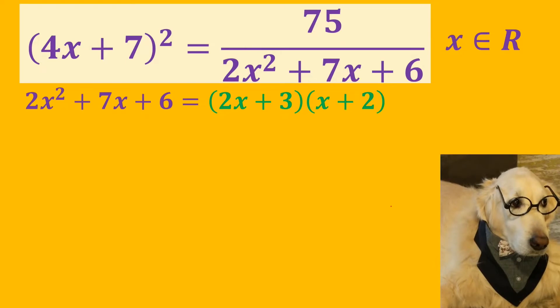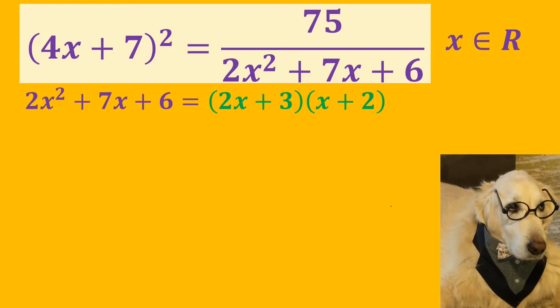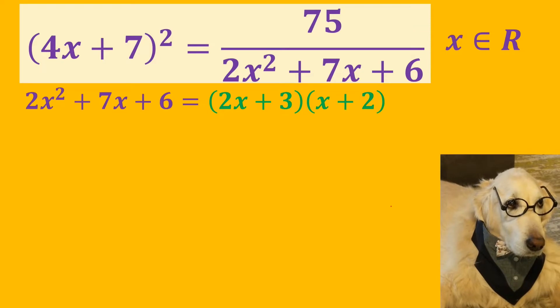We factor the denominator 2x² + 7x + 6. So now we have (2x + 3)(x + 2).